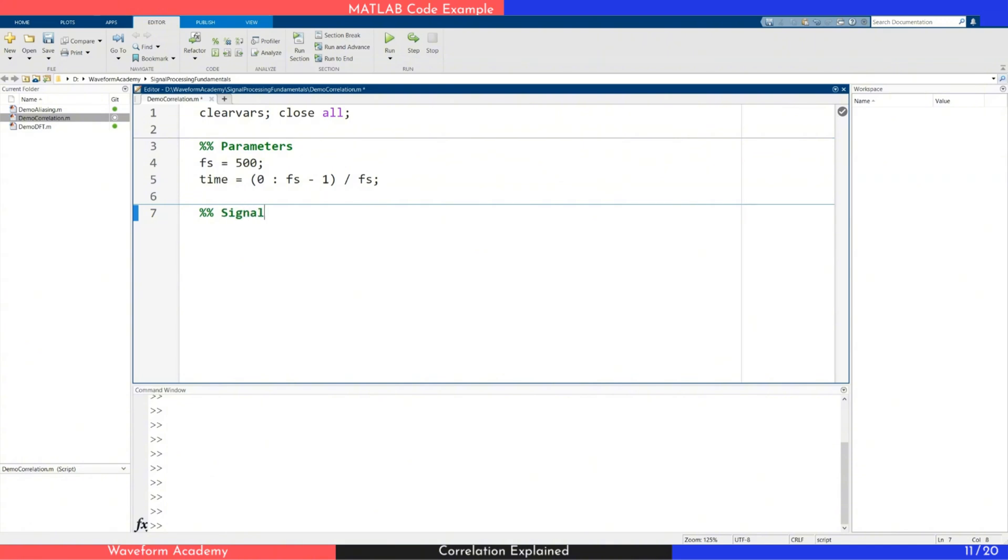Next, we generate three example signals. First, a rectangular pulse, often referred to as a boxcar window.